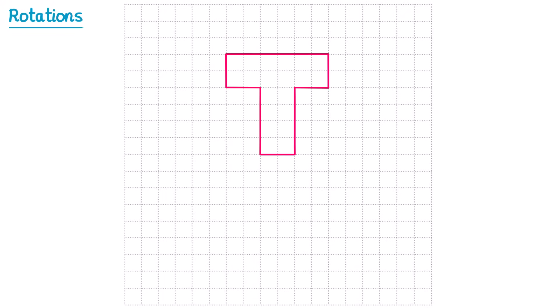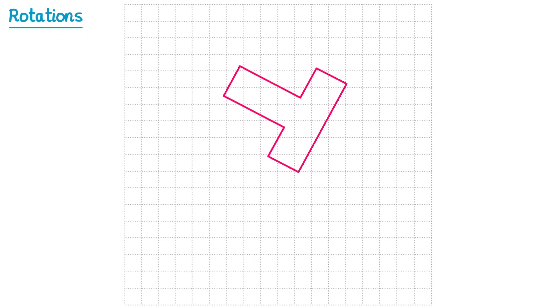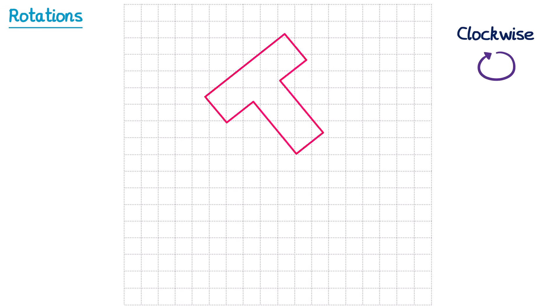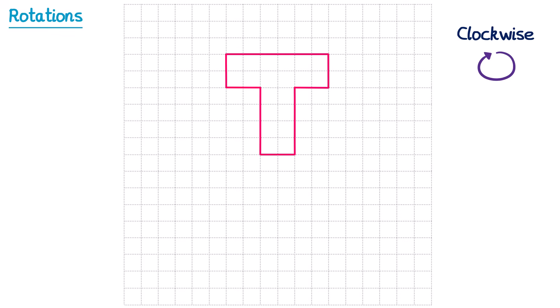When we rotate a 2D shape, we can move it in one of two directions. We could go in this direction here, which we call clockwise, because it follows the same direction as the hands on a clock. Or we could go in the opposite direction, and since that's the opposite to the way the hands on a clock move, we call that one anticlockwise.